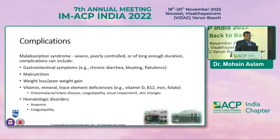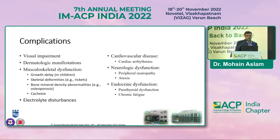Complications, if untreated and prolonged, include chronic diarrhea, bloating, malnutrition, weight loss, vitamin deficiencies resulting in osteomalacia and rickets, skin changes, hematological conditions like anemia and coagulopathy, visual impairment, dermatological manifestations, musculoskeletal dysfunction, electrolyte disturbances, cardiovascular disease like cardiac arrhythmias, neurological dysfunction resulting in peripheral neuropathy, and endocrine dysfunction like parathyroid dysfunction and chronic fatigue.